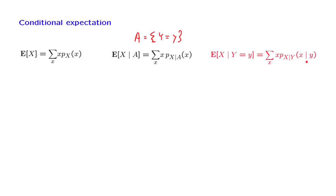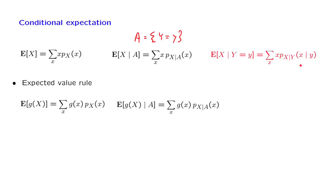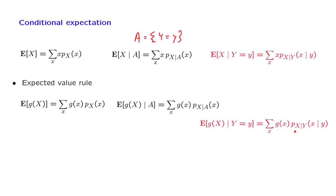Recall the expected value rule for ordinary expectations, and also the expected value rule for conditional expectations given an event — something we have already seen. In PMF notation, the expected value rule takes a similar form. The event A is replaced by the specific event that Y takes on a specific value, and in that case the conditional PMF given event A is just the conditional PMF given that random variable Y takes on a specific value little y.